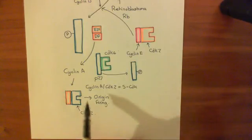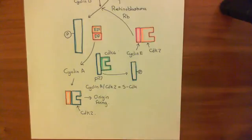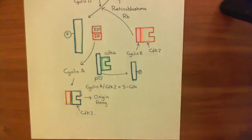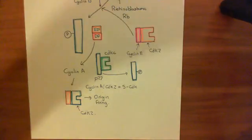So P21 is going to stop you from replicating the DNA by inhibiting cyclin-dependent kinase 2 from being able to bind with cyclin A. In the next video, we'll talk about how inhibiting the cyclin-dependent kinase 1 is going to prevent the progression through the M phase of the cell cycle.